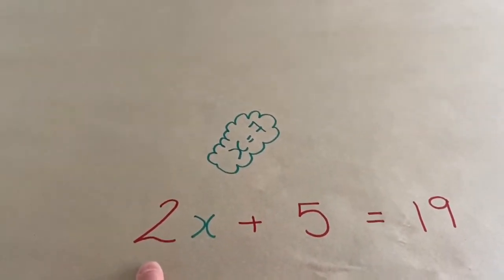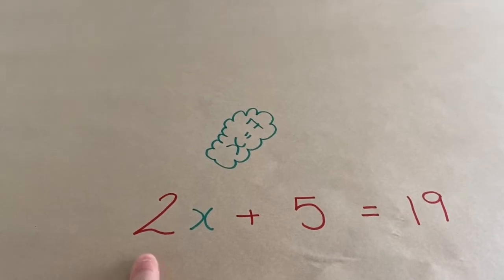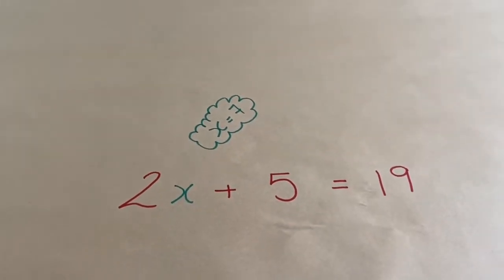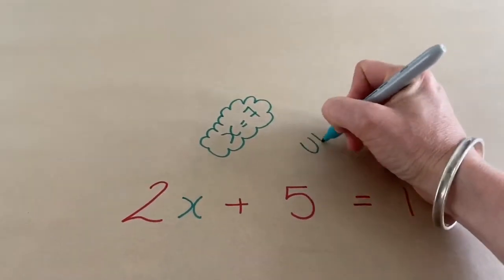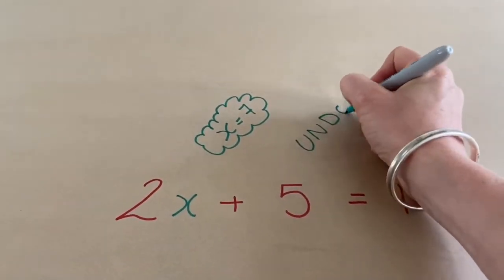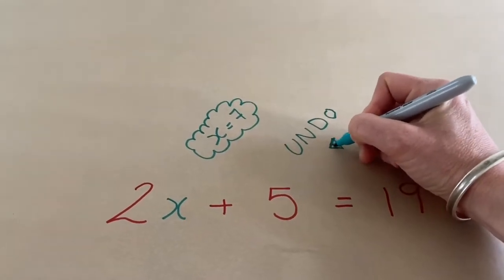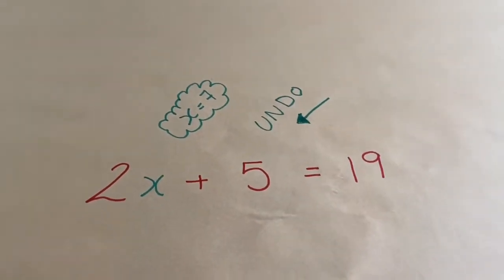7 times 2 gives you 14. And then we added 5. So, 14 plus 5 gives you 19. What we want to do is we want to undo what I did to x. Or I want to go backwards and take away all the things that I did to x.